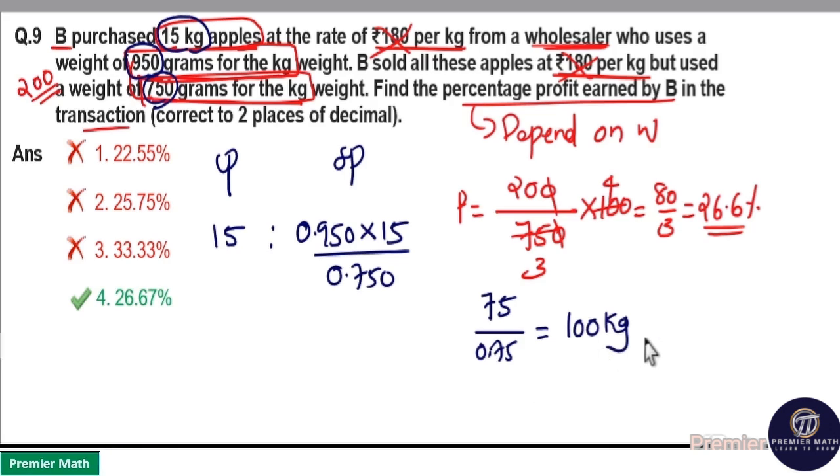That is you can sell 100 kilograms. You will get 100 kilogram price if you use this false weight here. Same thing happens here.